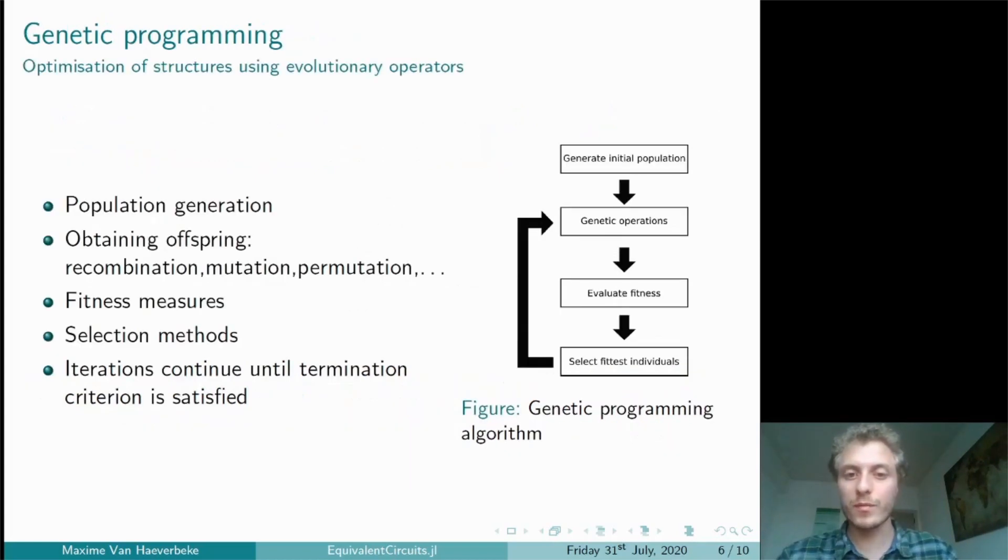The genetic programming algorithm can be summarized in four steps, each of which can be implemented in various different ways, depending on the application. The first step is to generate an initial population. This population is then extended by the application of genetic operations, which are loosely analogous to biological evolution.